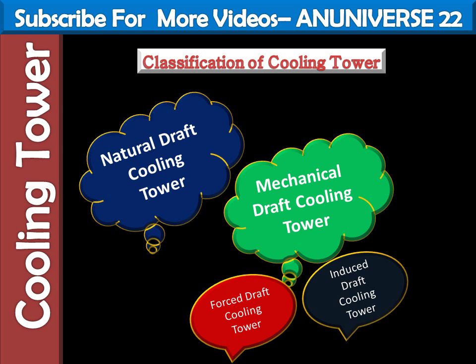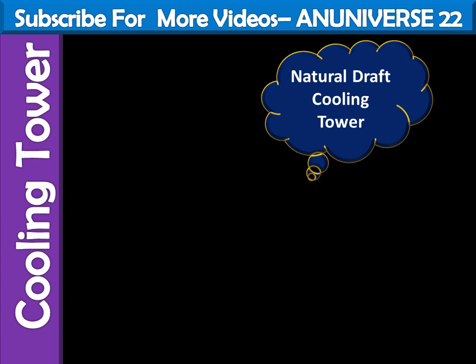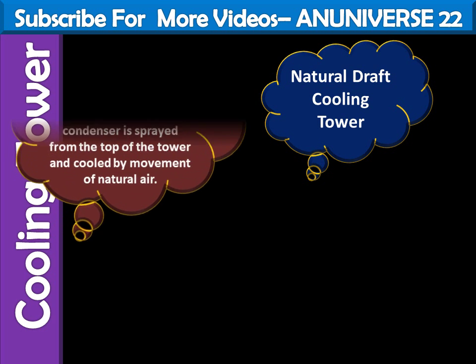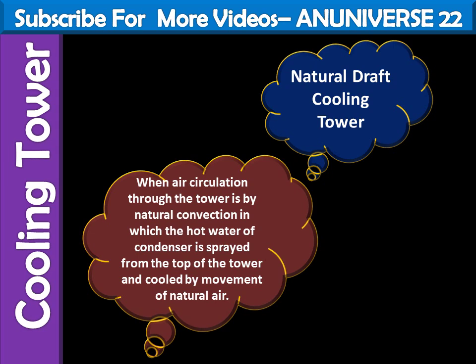Now we will discuss the natural draft cooling tower. Since the air circulating through the natural draft cooling tower is atmospheric air, these cooling towers are also known as atmospheric natural draft cooling towers, or simply atmospheric cooling towers. When air circulation through the tower is by natural convection, in which the hot water from the condenser is sprayed from the top of the tower and cooled by the movement of natural air, it is called a natural draft cooling tower.